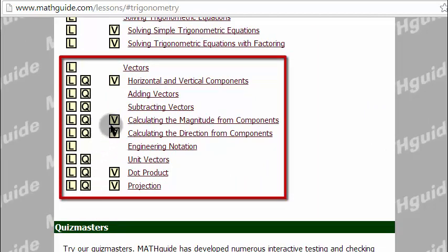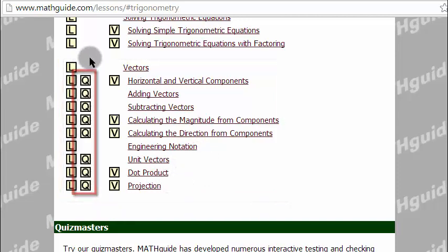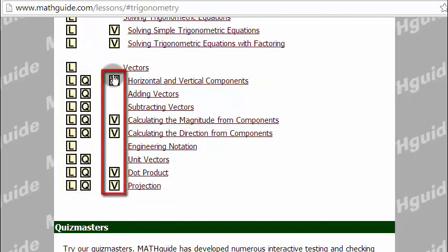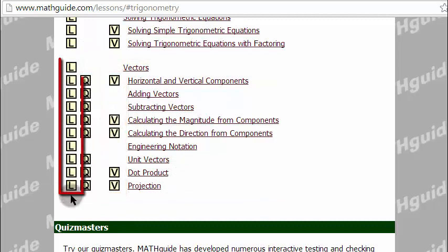And you can see that we have tons of material on horizontal and vertical components, adding and subtracting vectors, calculating the magnitude or direction. And then we even have lessons on engineering notation, unit vectors, dot product, and projections. We have interactive quizzes, we've got videos, and of course we just have the lessons themselves. Alright, let's get to our first section.